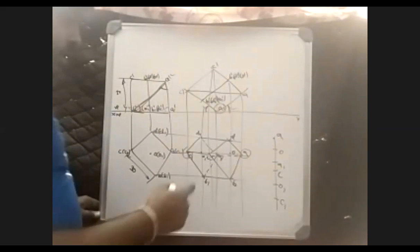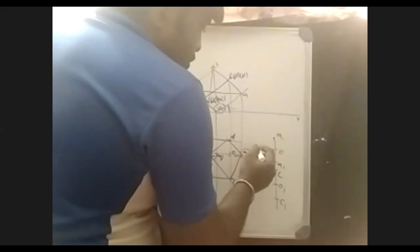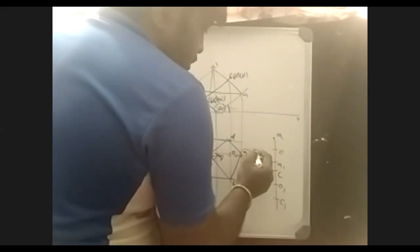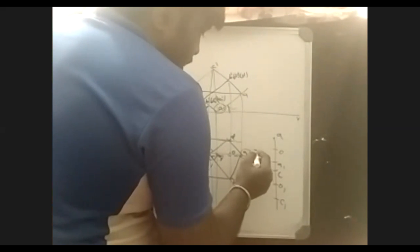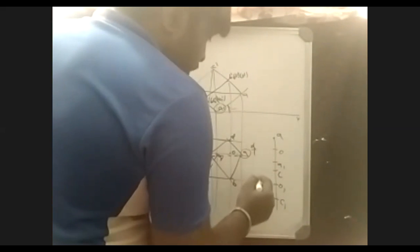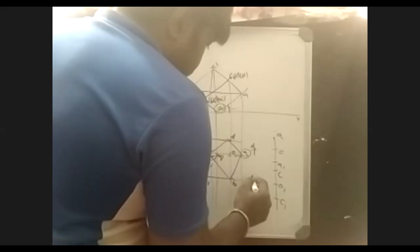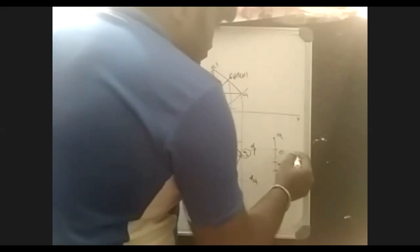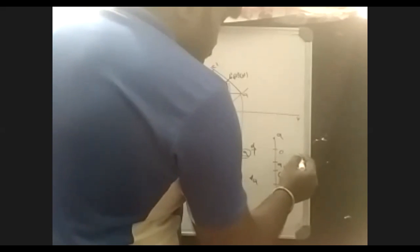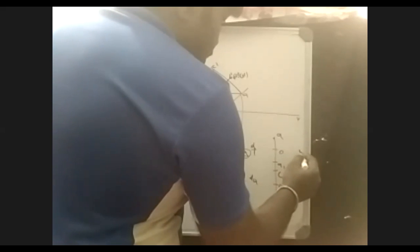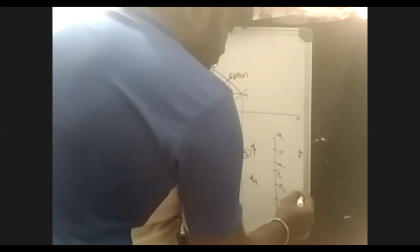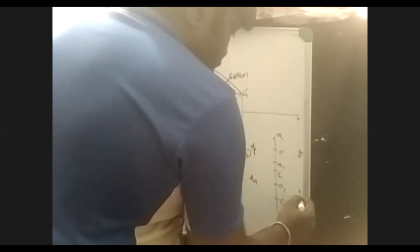Then, A to D, C to D, A to B, C to D. Same way over here, this will be D1. Same way over here, this will be D. Same way over here, this will be D1.